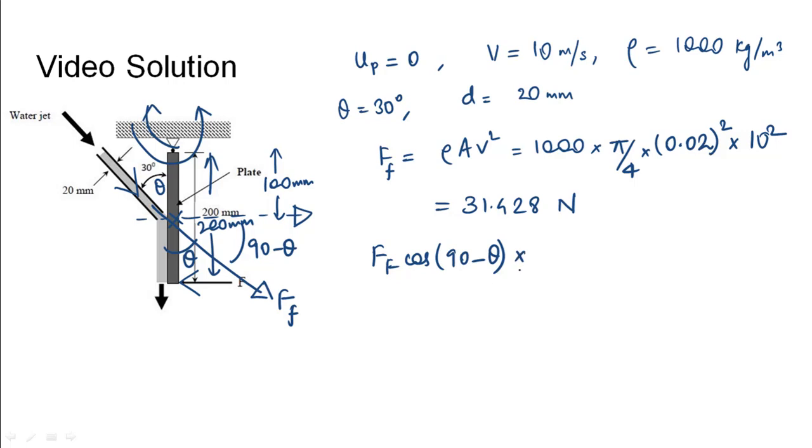The fluid is exerting on the midpoint so the gap between the fluid force and the hinge is 100 millimeters. This should be equal to the moment due to the external force, that will be F into 200. This would result in F equals 31.428 into cos of 60 degrees that will be 1/2 into 100/200 that is 1/2. This would turn out to be 7.85 newtons.